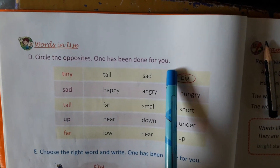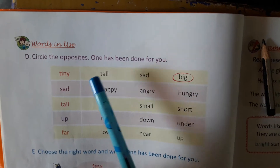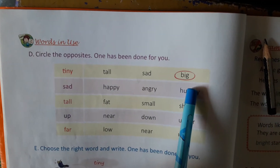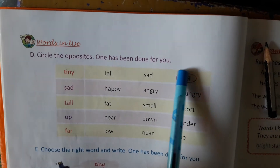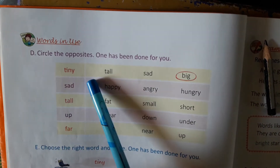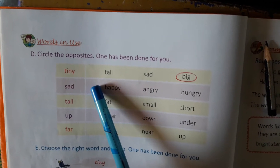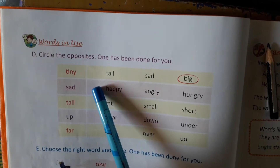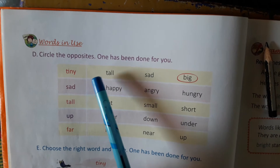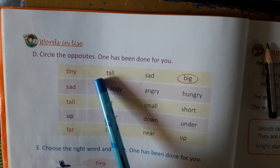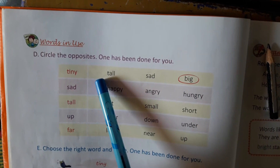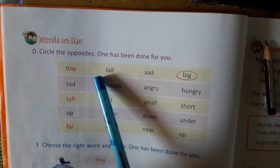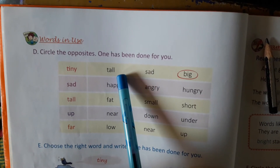तो बच्चो आपको क्या करना है? ये words के आपको opposite word इधर mark करने है, circle करने है. आपके लिए पहला वाला कर दिया गया है. Opposite यानि की विप्रीत. Circle the opposites — एक आपके लिए कर दिया गया है.